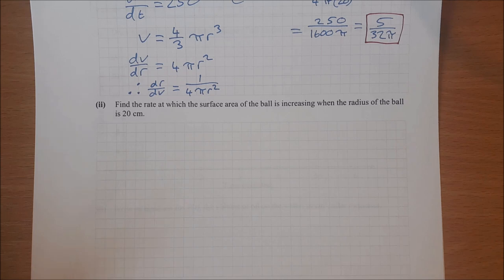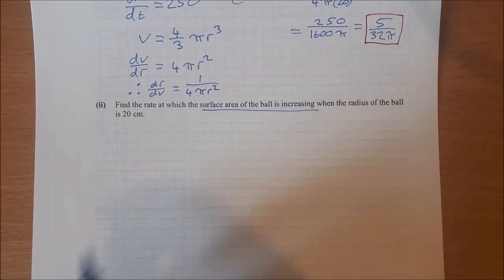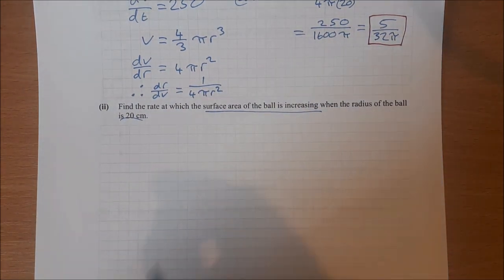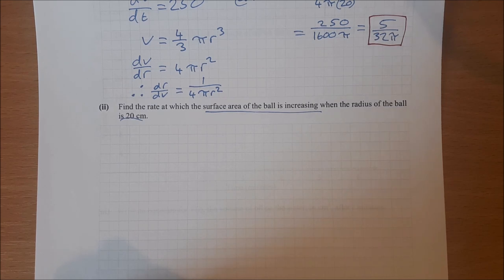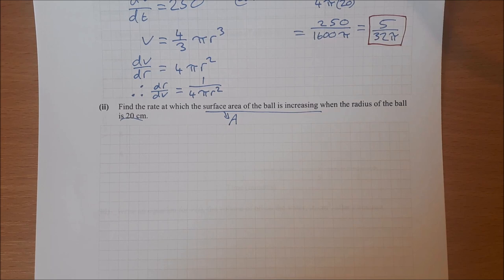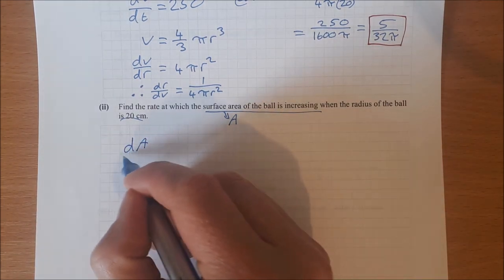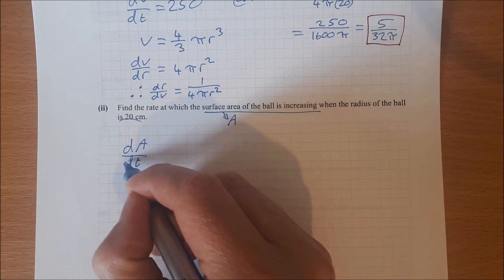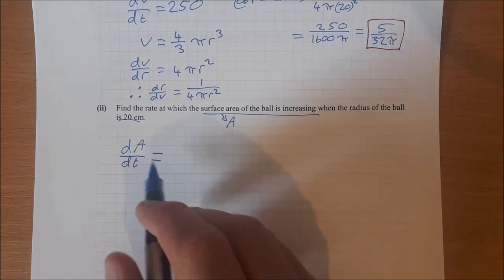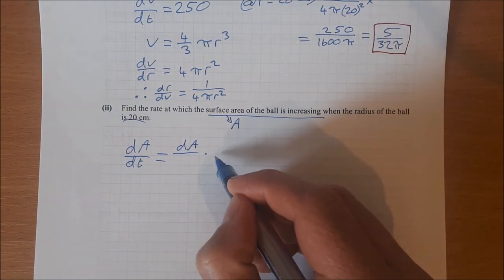So that there is the rate at which the radius is increasing when the radius is 20 centimeters. Part two asks us to find the rate at which the surface area is increasing when the radius of the ball is 20 centimeters. So the rate at which the surface area is increasing, let's say surface area is A. Okay, A for area. So that would be dA/dt, the rate of change of area with respect to time.